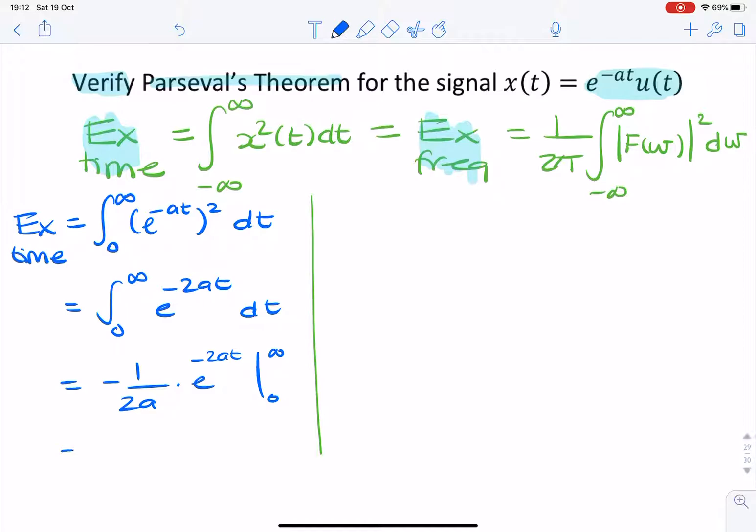And that gives me minus 1 over 2a times e to the minus infinity minus e to the power 0.